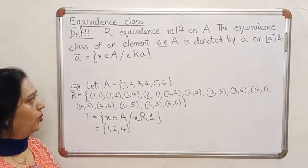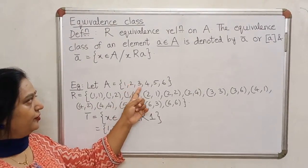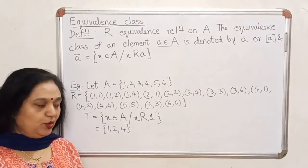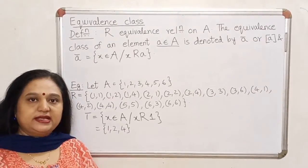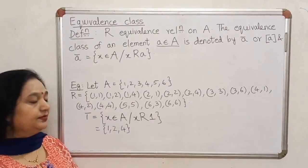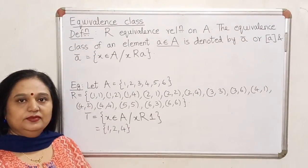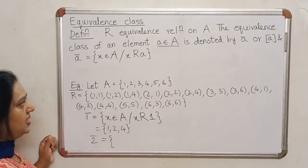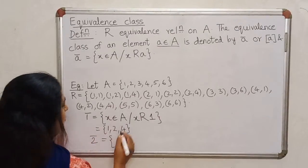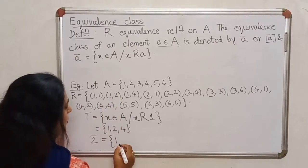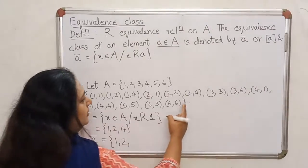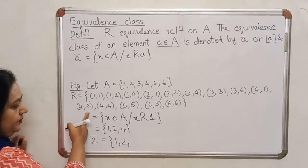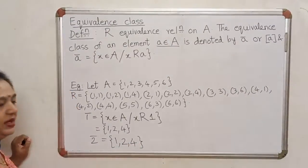Pause the video and find the equivalence classes of the remaining elements of A yourself. Once done, resume the video to check your answers. The equivalence class of 2 contains: 1 (since 1 is related to 2), 2 (since 2 is related to 2), and 4 (since 2 is related to 4, so 4 is related to 2). These are the only elements related to 2, so the equivalence class of 2 is {1, 2, 4}.